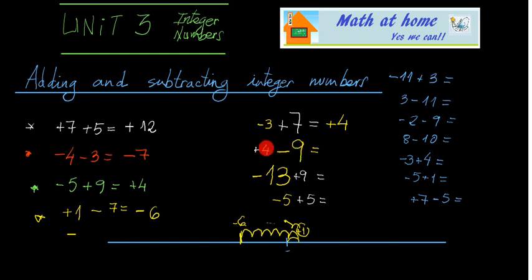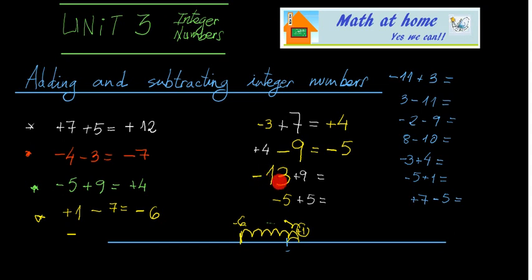Here again, they have different signs — negative and positive — and the one with the greater absolute value is minus 9, so the sign is going to be negative. The solution is the difference, which gives 5. Again, both have different signs, and the sign of the solution takes the sign of the greater absolute value — in this case 13 — so it is negative, and when you do the difference, you get 4.